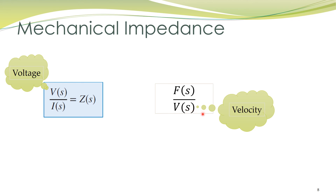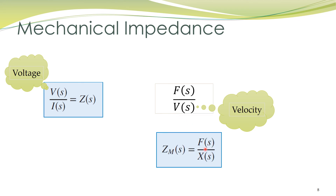Mechanical impedance can be defined as force divided by velocity. However, in mechanical systems we are more interested in displacement than in velocity, so we can also define mechanical impedance as force divided by displacement. In the next part of this lecture we shall discuss a more complex mechanical system and study how to use the concept of mechanical impedance to obtain its mathematical model.